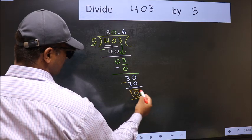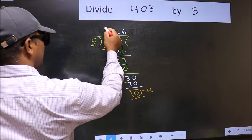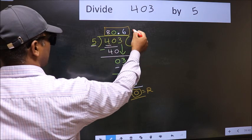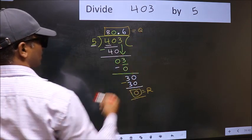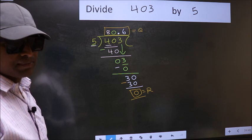So this is your remainder and this is our quotient. Did you understand where the mistake happens?